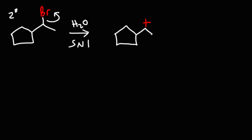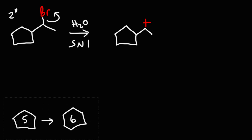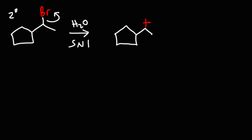The answer is yes. If you have a five-carbon ring, you can expand it to a six-carbon ring, creating a more stable situation — six-carbon rings are highly stable and won't rearrange further. But if you have a five-carbon ring it can expand to a six-carbon ring, and likewise if you have a four-carbon ring it can expand to a five-carbon ring.